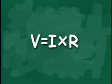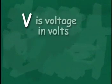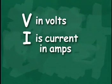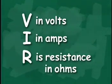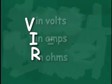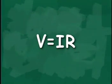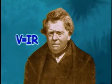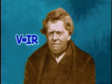Voltage and current are related by the simple equation V equals IR. V stands for voltage, which is usually measured in volts. I is the current, usually measured in amps. And R is called the resistance, measured in units called ohms. The equation V equals IR is actually called Ohm's Law, after G.S. Ohm, a German scientist, and the unit of resistance was named in his honor.